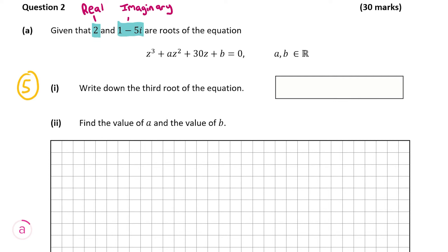Just to remind you what the conjugate is: if we have a complex number z equal to a plus bi, then the conjugate of z is a minus bi. To denote a conjugate, we put a bar above the z. So we have one of the imaginary roots here as 1 minus 5i, so the conjugate of that is going to be 1 plus 5i. That's our answer for part A(1).